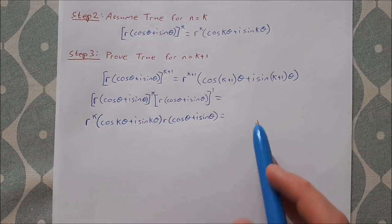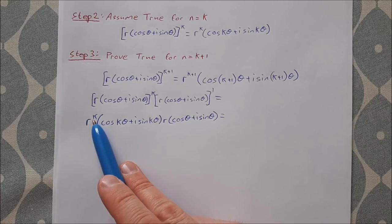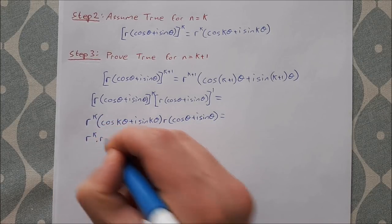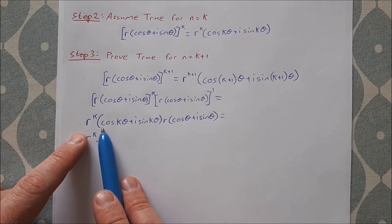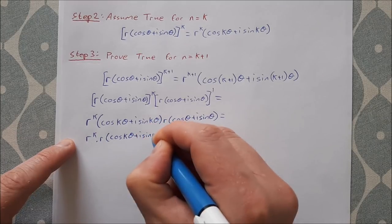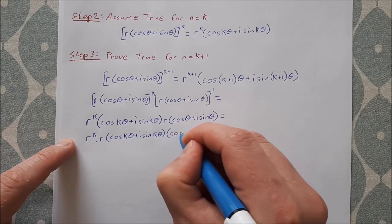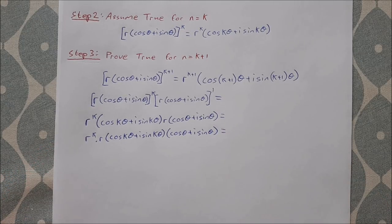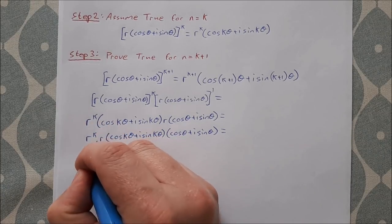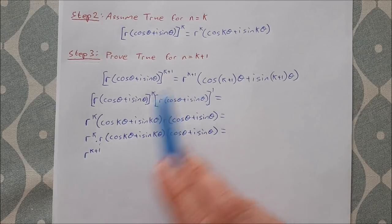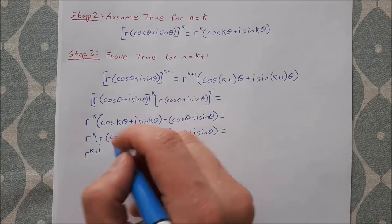Multiplication is commutative, so I can reorder: r to the k times r, multiplied by cos k theta plus i sine k theta, times cos theta plus i sine theta. Now r to the k times r equals r to the k plus 1 by laws of indices, and I can see that's the first part of my right-hand side that I'm looking for.